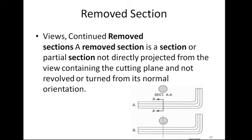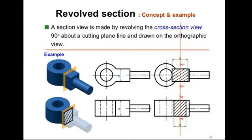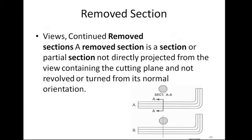In removed section — removed section and revolved sections are very close to each other. What we are doing in removed section: the views are continued, removed. A removed section is a section or partial section, not directly projected from the view, continued in the cutting plane, and not revolved or turned from its normal orientation.